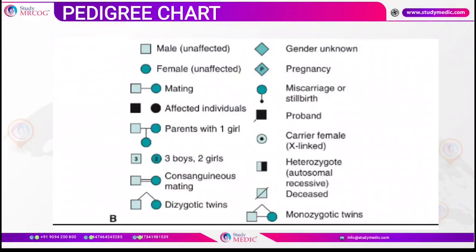Now moving on to pedigree charts. The commonly used symbols are: an unaffected male is represented by a square; an unaffected female by a circle; a single line between male and female means mating; two lines indicate consanguineous mating. Dizygotic twins are represented by a box and circle connected by an arrow; monozygotic twins by a triangle. Miscarriage or stillbirth is represented by a dot. Affected individuals are represented by darkly colored boxes. A carrier female is represented by a circle with a dot; a heterozygote in autosomal recessive by a half-shaded box. A deceased individual has a slash across their symbol.